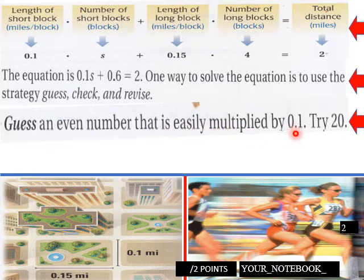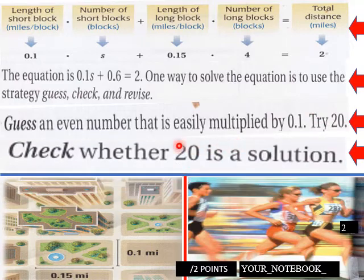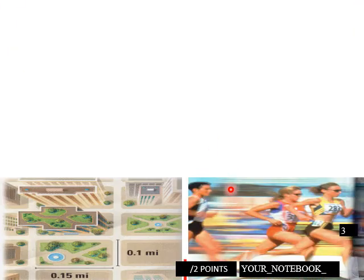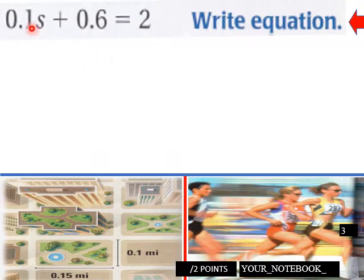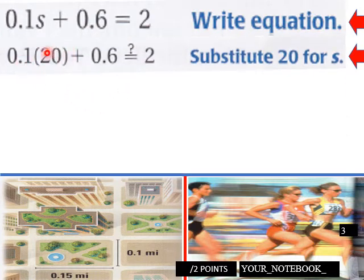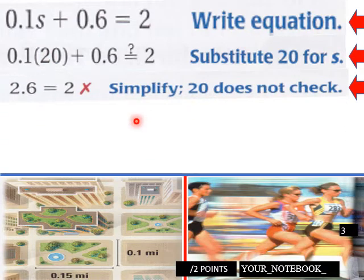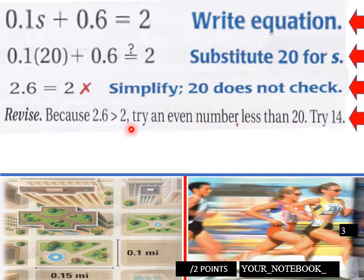One way to solve the equation is to use a strategy: guess, check, and revise. So we could do that, guess and check, by seeing if the equation works. Let's try 20 as our first guess. 0.1 times 20 plus 0.6 equals 2.6, and 2.6 does not equal 2. Simplify, 20 does not check. So it's not 20.